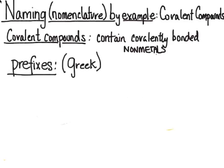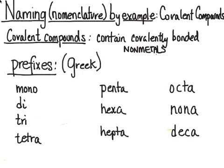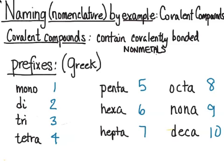Mono is one, di is two, tri is three, tetra is four, penta is five, hexa is six, hepta is seven, octa is eight, nona is nine, and deca is ten. There are some more after ten, but those are less commonly used. These are the most common Greek prefixes used in the naming of binary covalent compounds.